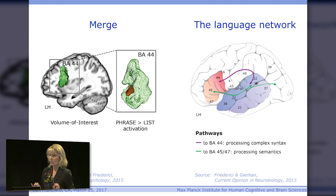So now we have two major things that we need at least for processing syntax, which is the core of language: that is merge in BA44, and this fiber track going from BA44 to the posterior temporal cortex. But can we show that this fiber track is really involved in syntactic processes?